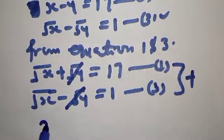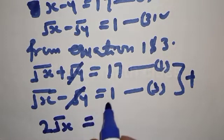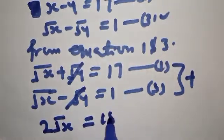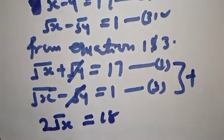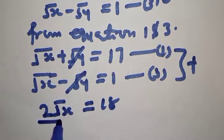Adding equations 1 and 3, the square root of Y terms cancel. We are going to have 2 times square root of X equal to 17 plus 1, which is 18. We then divide both sides by 2.